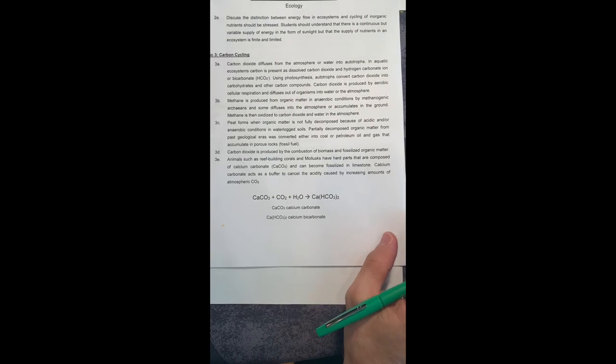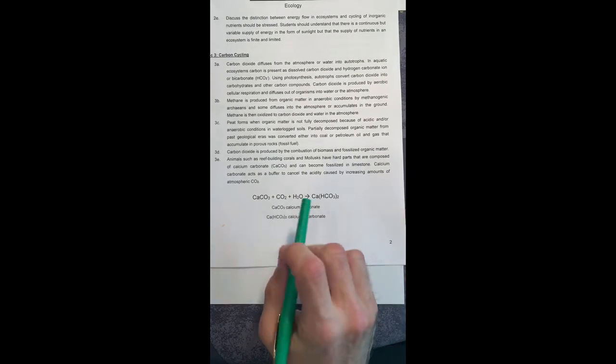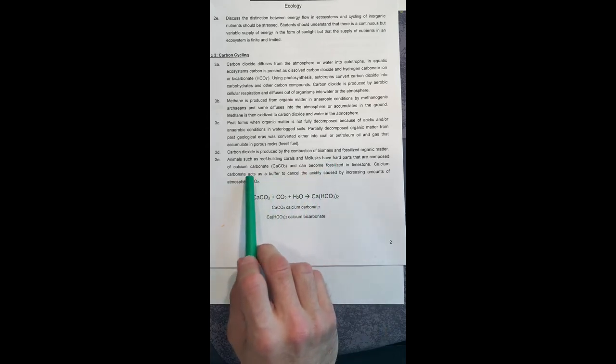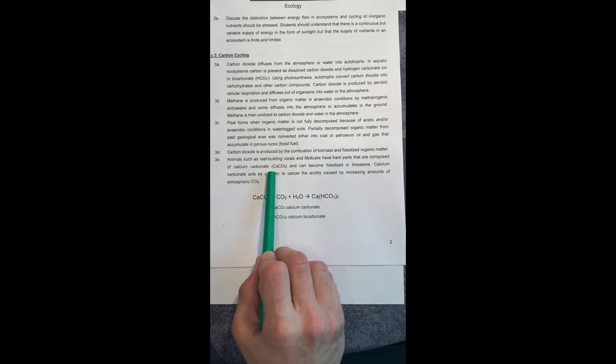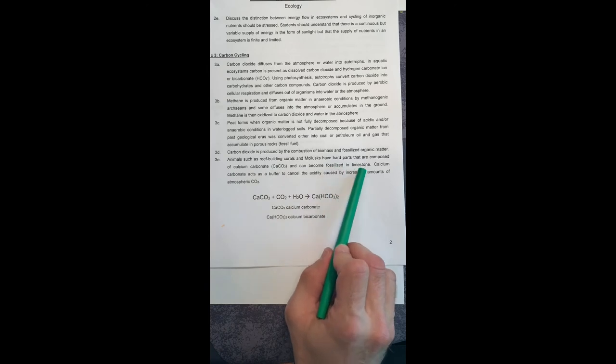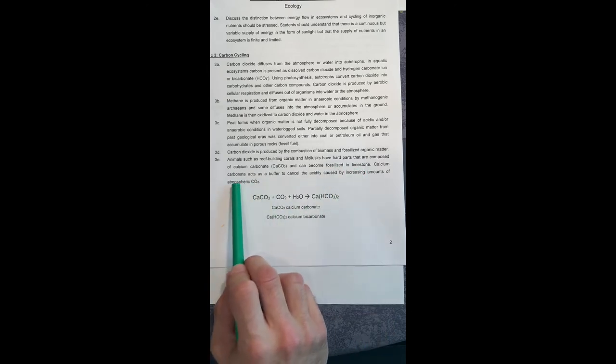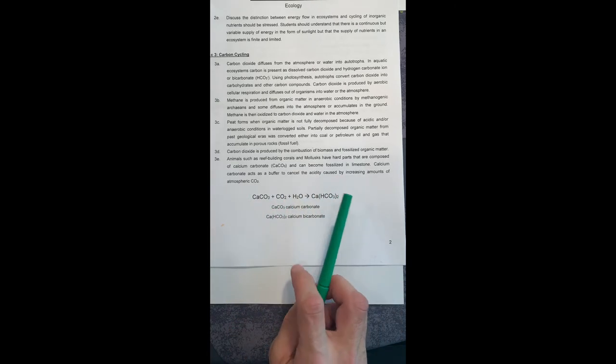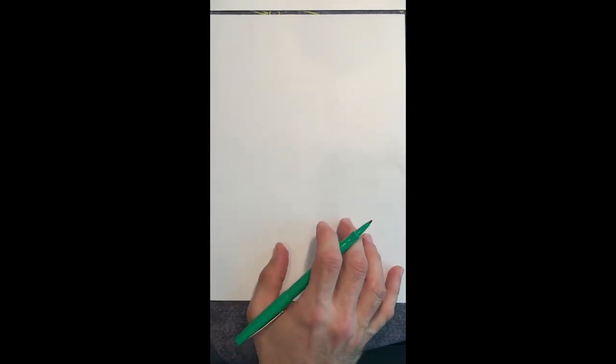So 3E. 3E says animals such as reef building corals and mollusks have hard parts that are composed of calcium carbonate, CaCO3, and can become fossilized in limestone. Calcium carbonate acts as a buffer to cancel the acidity caused by increasing amounts of atmospheric CO2. And then we go through this. Let's talk about corals and mollusks.